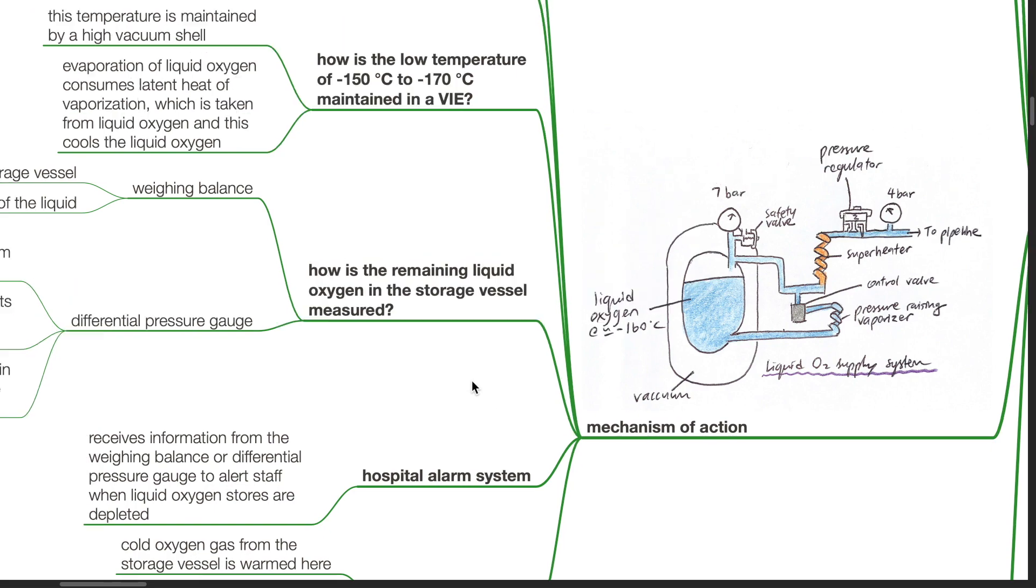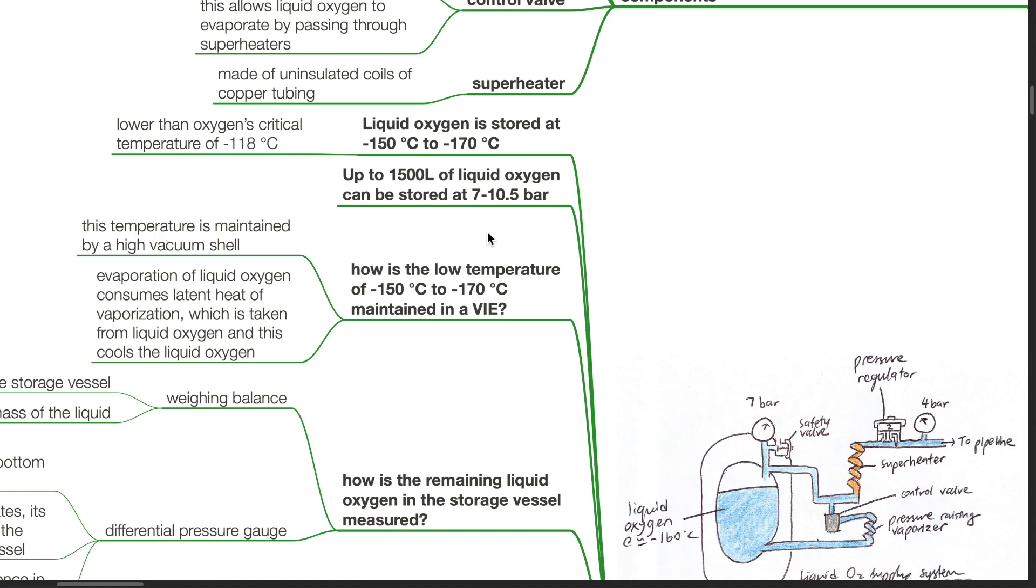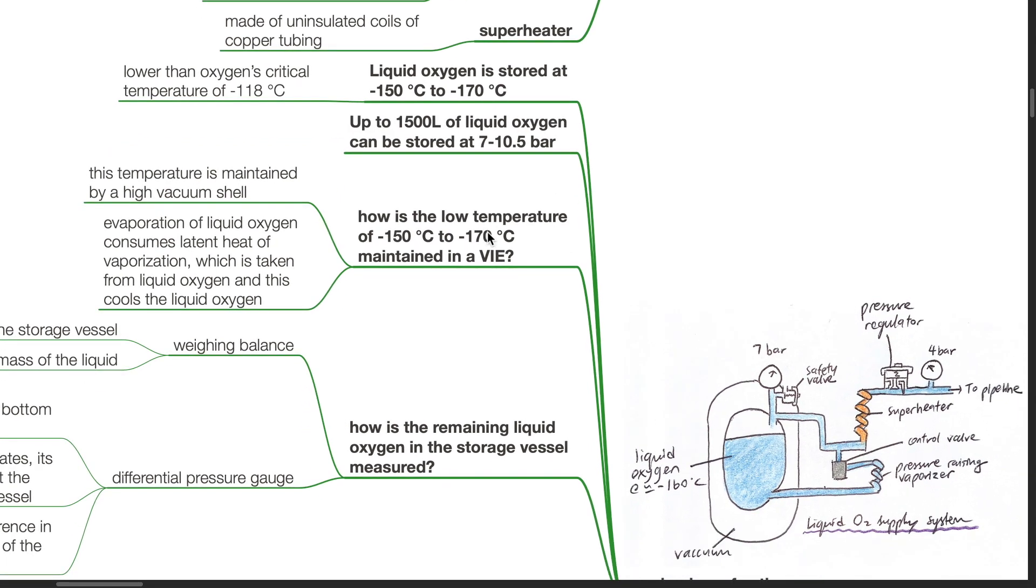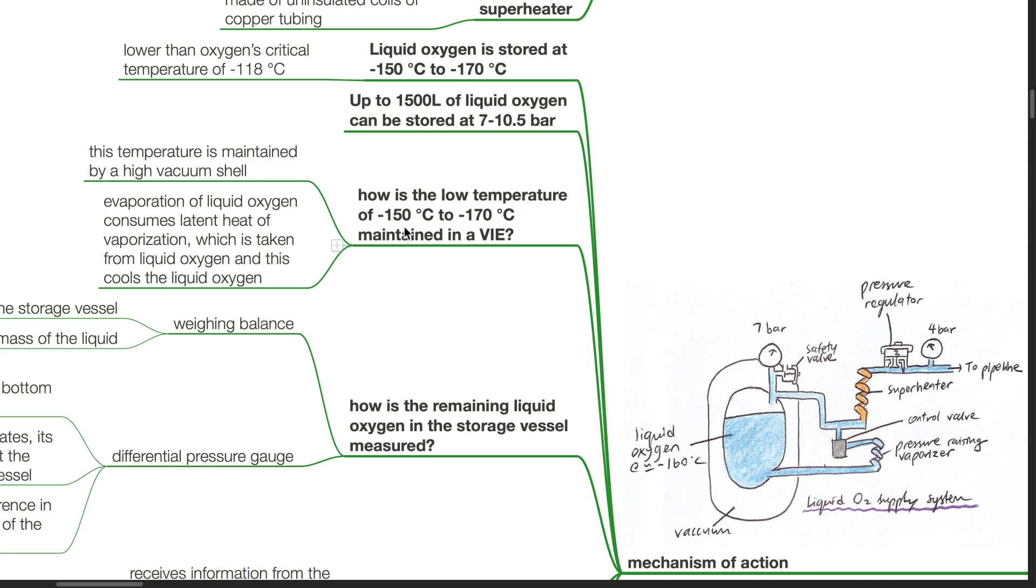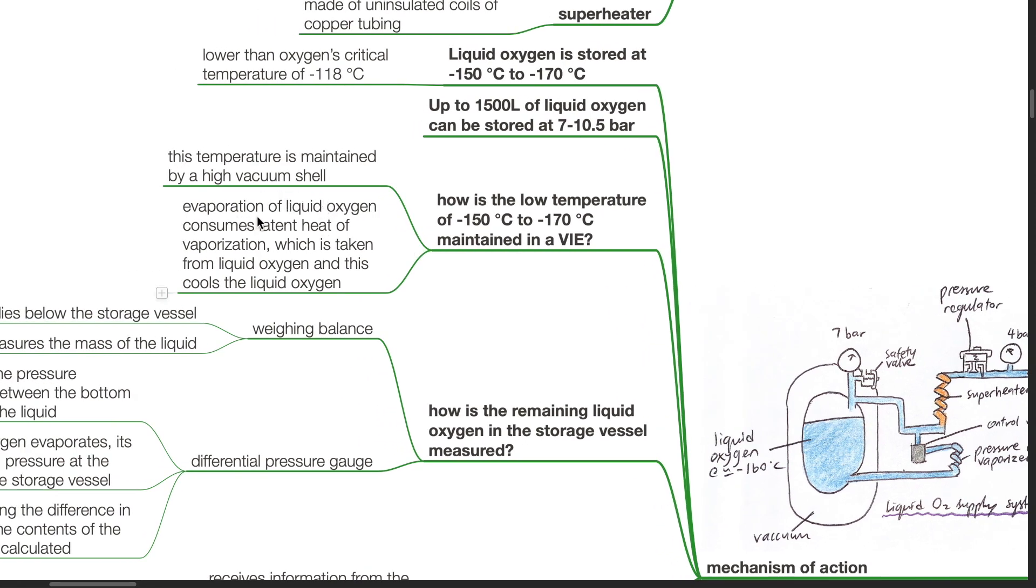Mechanism of action: Liquid oxygen is stored at negative 150 to negative 170 degrees Celsius, which is lower than oxygen's critical temperature of negative 118 degrees Celsius. Up to 1500 liters of liquid oxygen can be stored at 7 to 10 bar. The low temperature is maintained by a high vacuum shell. Evaporation of liquid oxygen consumes latent heat of vaporization, which is taken from liquid oxygen and this cools the liquid oxygen.